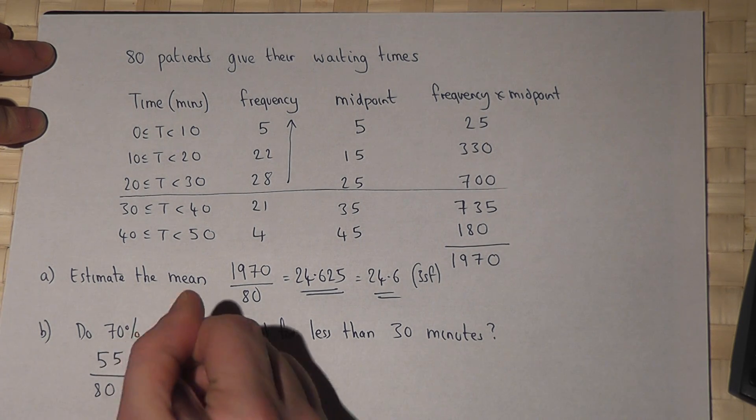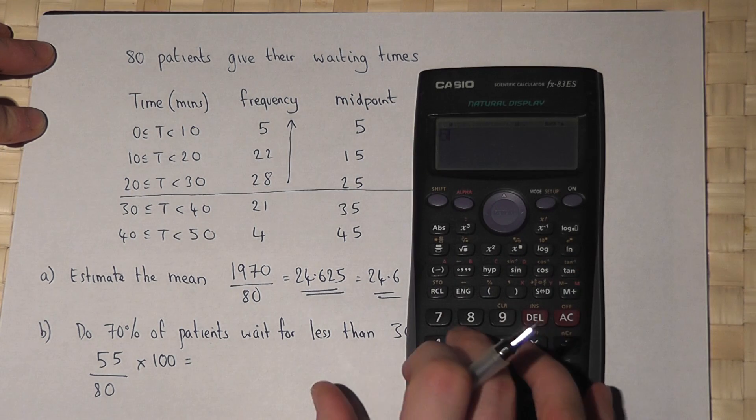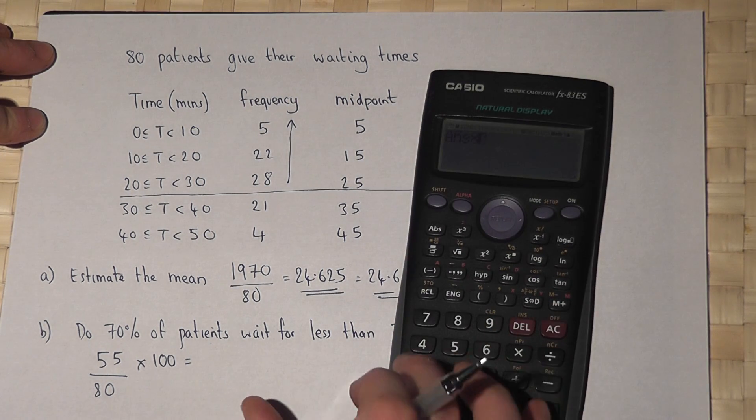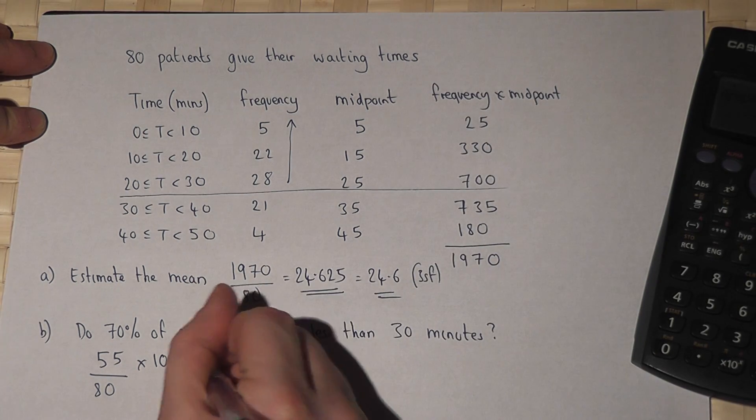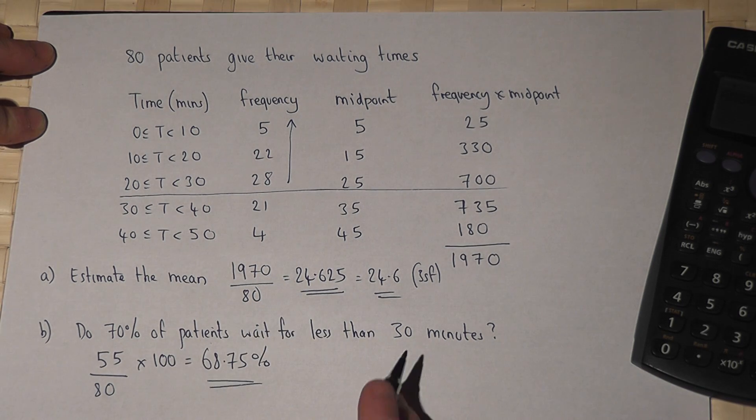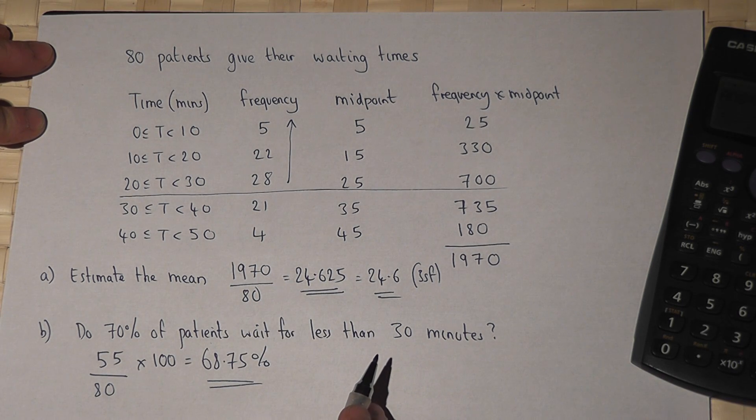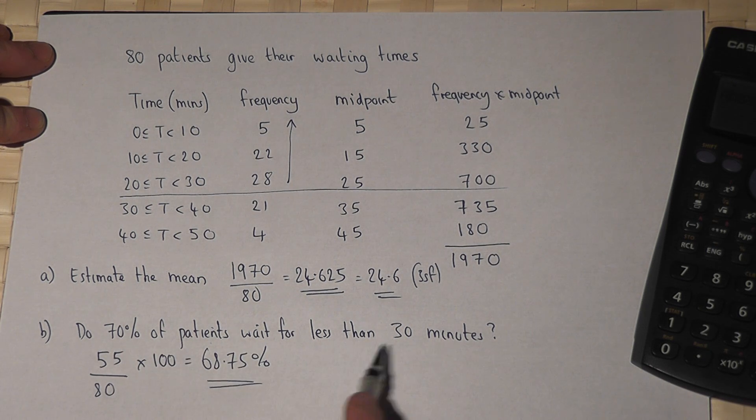So as a percentage we times this by 100. So 55 divided by 80 times by 100 works out at 68.75 percent. So the answer is no. Slightly less than 70% of patients wait for less than 30 minutes.